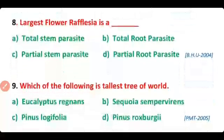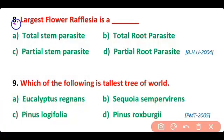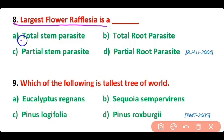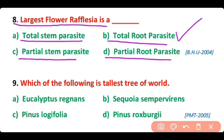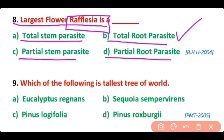Question 8. The largest flower, Rafflesia, is: a total stem parasite, total root parasite, partial stem parasite, or partial root parasite? The correct answer is option B. The largest flower, Rafflesia, is a total root parasite.